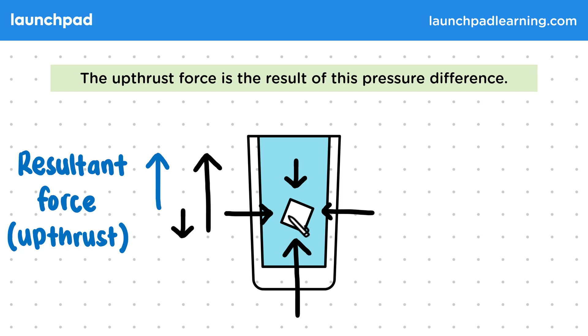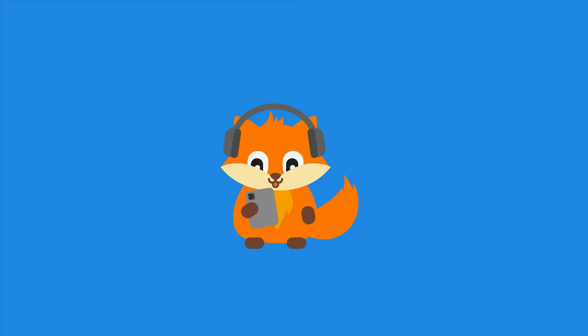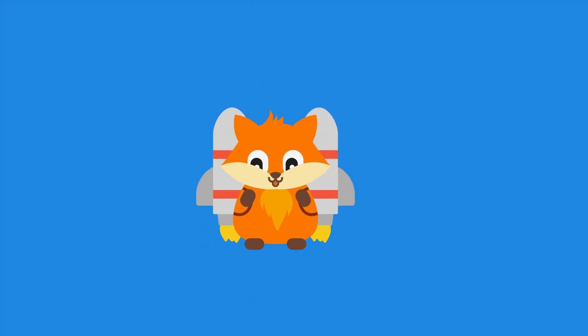In an exam you may be asked to explain how pressure differences will cause a submerged object to experience upthrust. The resultant is a result of this pressure difference.